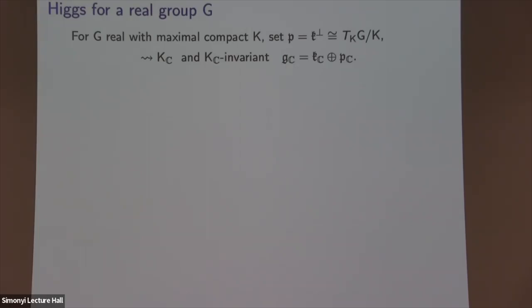For complex groups there aren't any interesting components — you need to go to real groups to get the things I'm going to tell you about. So I have to explain what a Higgs bundle is for a real group. When you do this correspondence, you want to get a flat connection with holonomy in some real group.